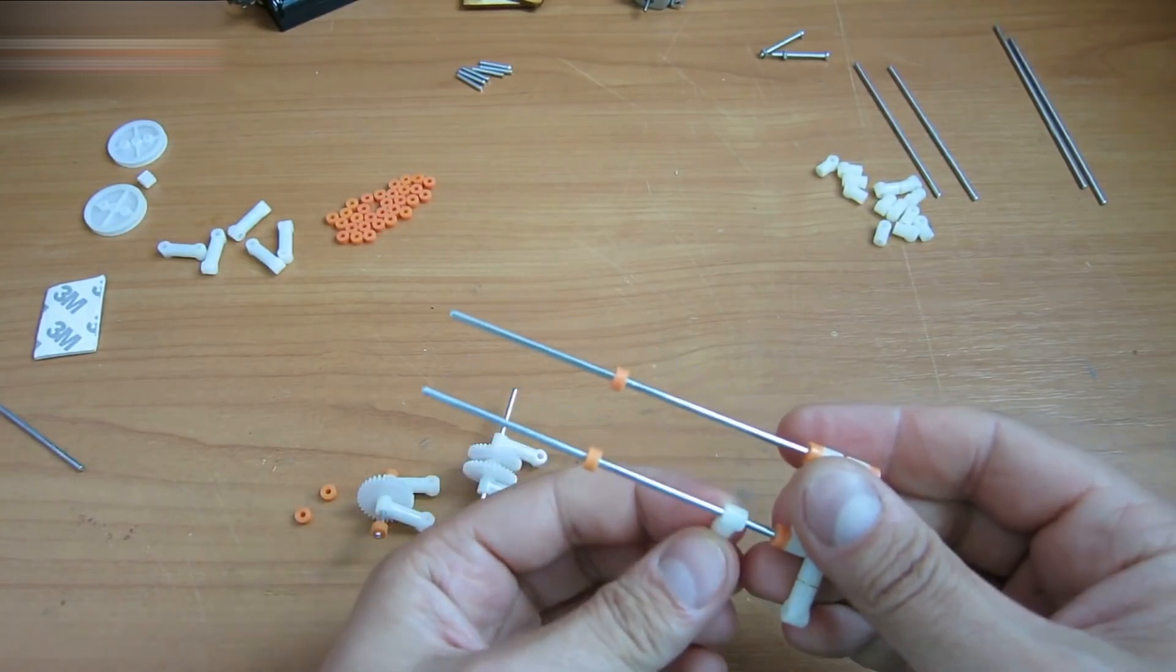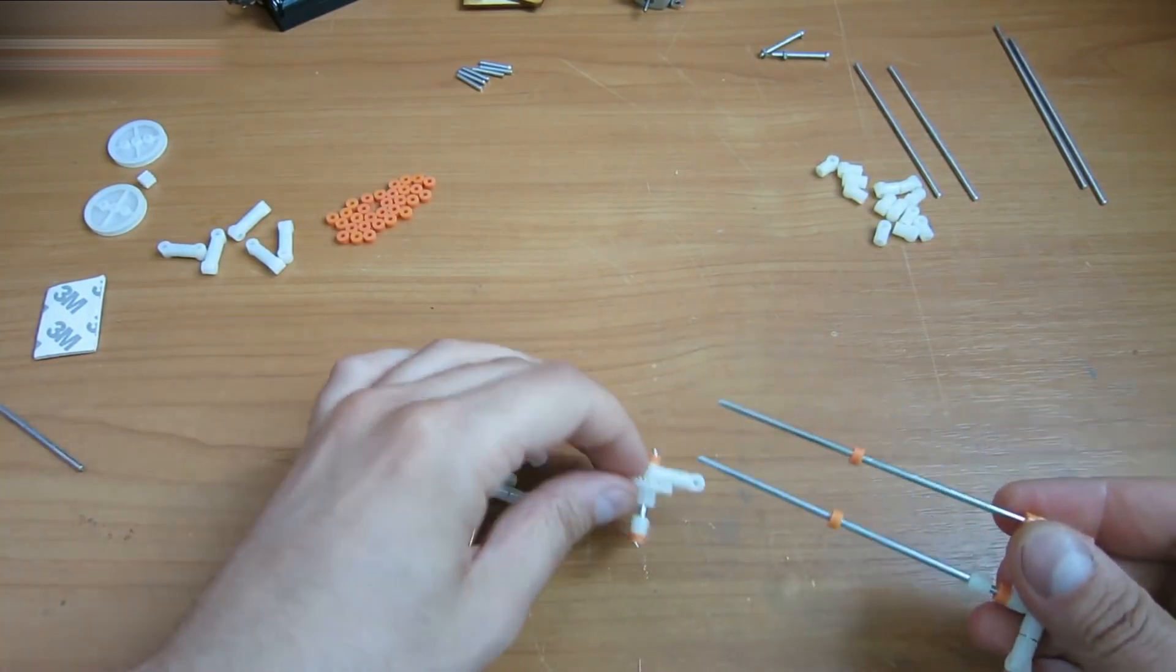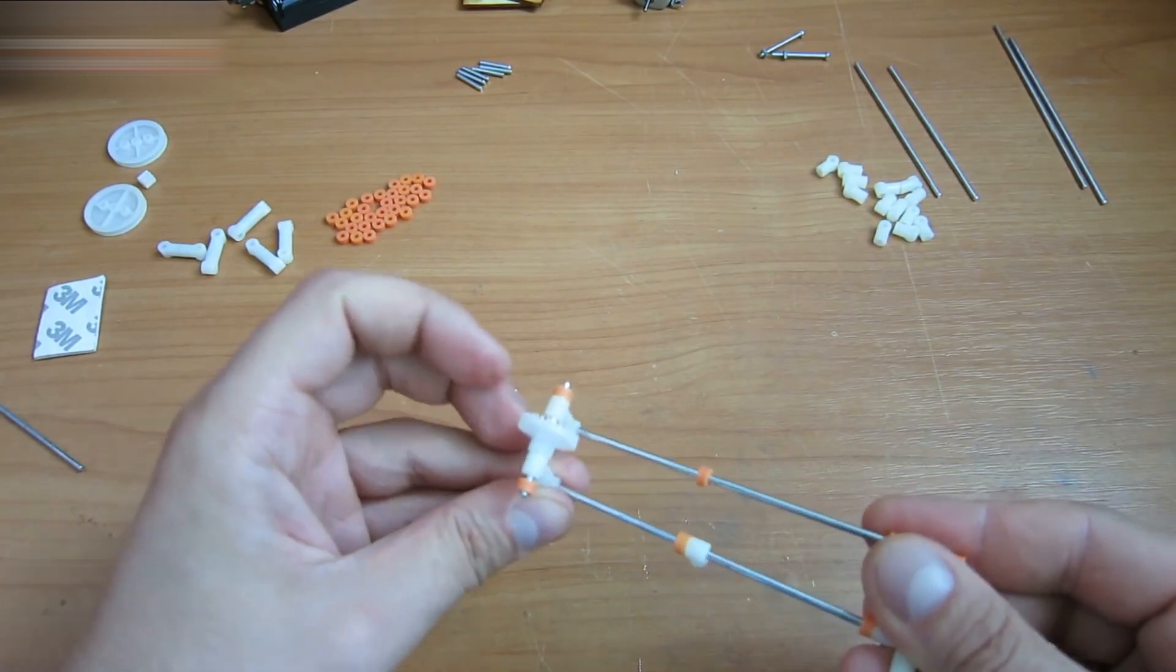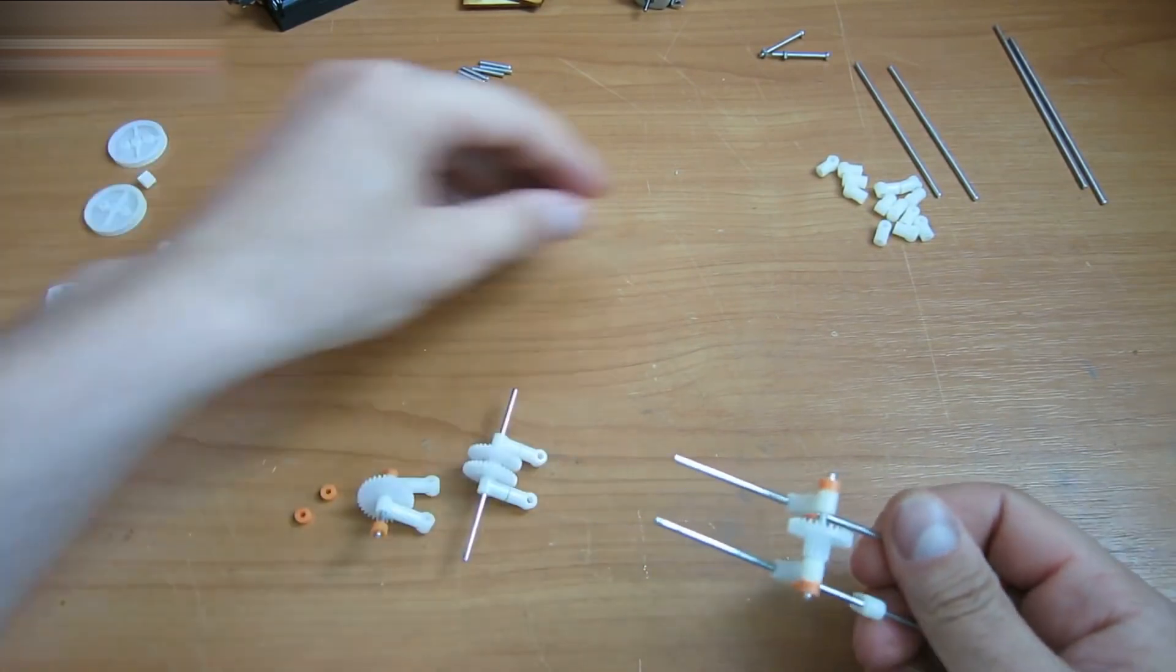Attach the elements with gears on the base. The reducer is ready. It will transfer rotation from the motor to the robot's legs.